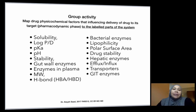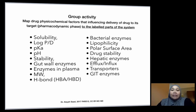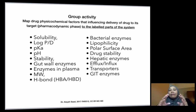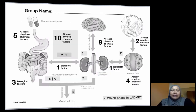Hi guys. So this morning I asked you to do a group assignment — to map the drug physical-chemical properties or factors that will influence the delivery of drug to its target. That is the pharmacodynamic phase, and map the factors to the labeled parts of the system. So these are the factors, and I asked you to map them to the whole system. Let's have a look at each one.